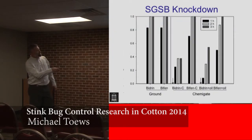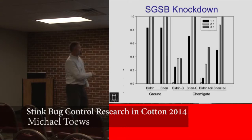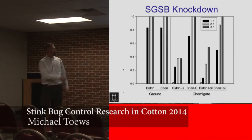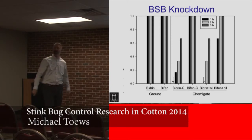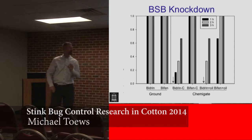Here are the knockdown results. The two bars on the left are Bidrin and Bifenthrin in 10 gallons — the ground rig control. At one hour, about 80% knocked down; at two hours, 100% knocked down for southern greens. Looks pretty good. But when I chemigate: Bidrin — our hammer, the one we put out when we really feel we have a problem — I'm only knocking down about 40% of insects. With the oil added, I didn't knock down any at one hour. For brown stink bugs: with the ground rig we knock everything out in an hour — no problem. With chemigation, Bidrin knocks down about 20% in an hour, just over half after three hours. With the oil, I didn't knock any down in an hour. That concerns me.